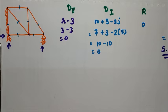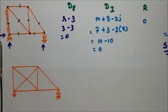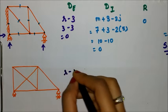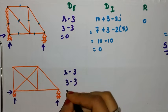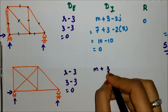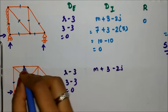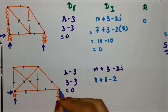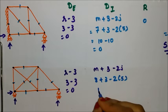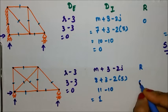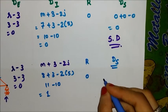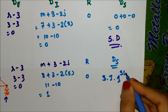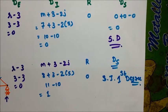Now let's take the next truss. This is another truss and again we have to calculate the same quantities. What is our DE? r minus 3, same as the previous one — three minus three is zero. For DI: m plus 3 minus 2j. How many members? One, two, three, four, five, six, seven, eight — so eight members. Eight plus 3 minus 2 times the joints. Joints: one, two, three, four, five — so five joints, giving 11 minus 10 equal to 1. I don't have any releases, so DS is zero plus one, equal to one. The structure is statically indeterminate to the first degree.